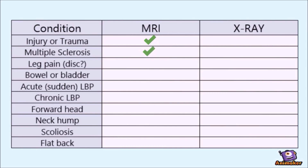Leg pain — in this case, we're talking sciatica. The type of pain that comes from the buttocks, runs down the back of your leg right to your foot, and is usually the result of a herniated or slipped disc. Soft bits, nerve — MRI.